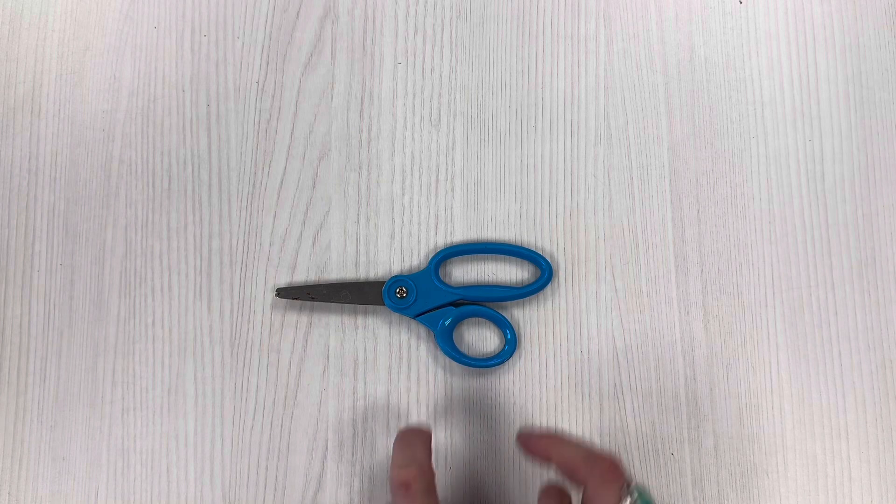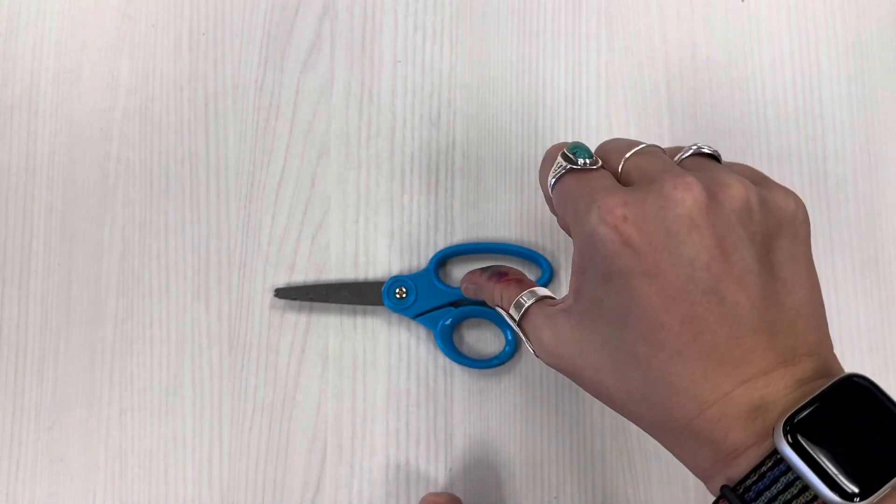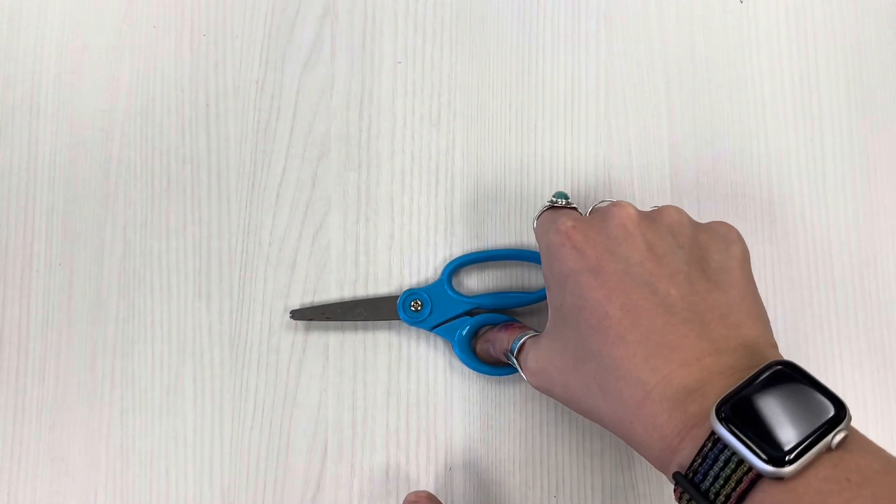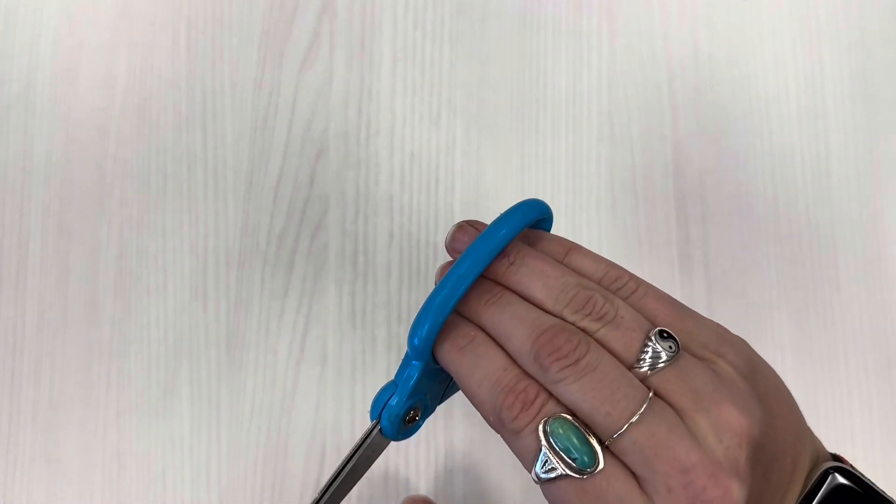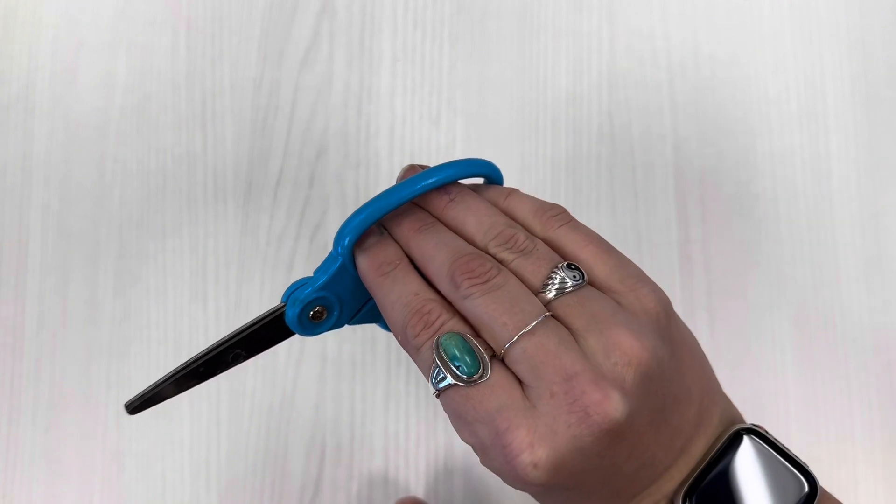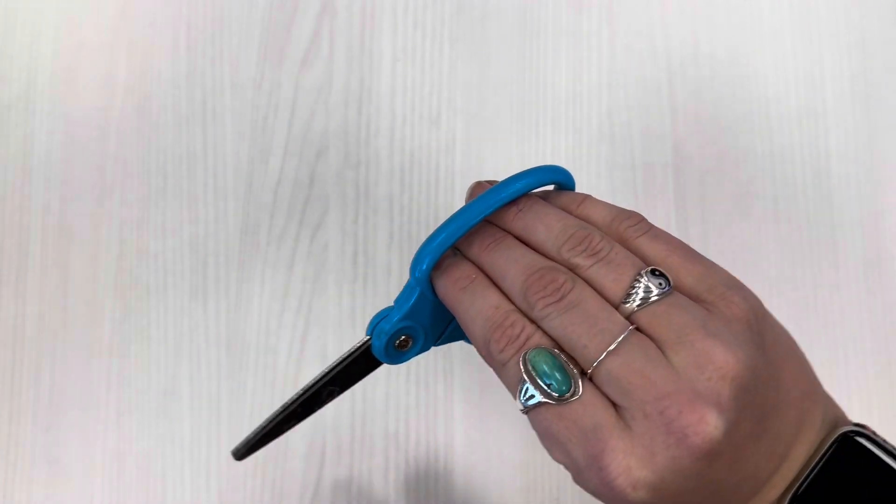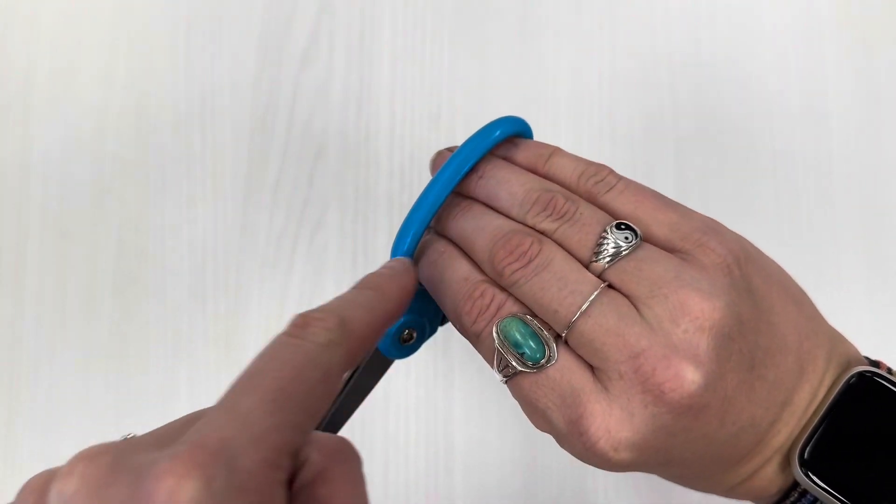This circle is for your thumb. You're gonna put your thumb down in that hole and the rest of your fingers go inside the other oval. Now Miss Gay has big old adult hands so my pinky won't fit in there but I bet yours will.